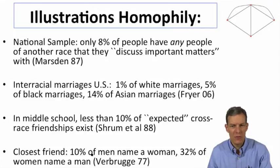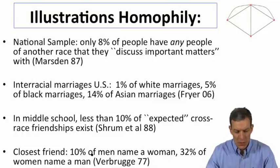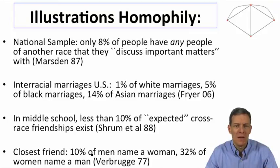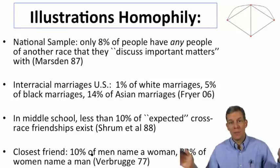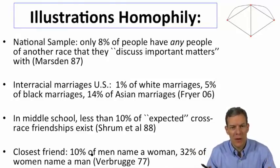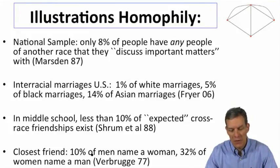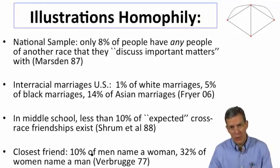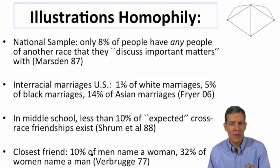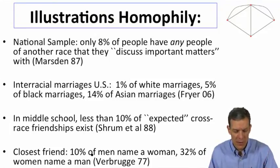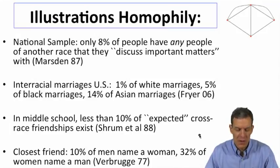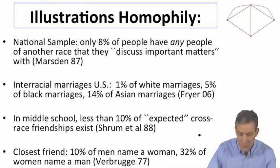To give some feeling for this: Peter Marsden's study, looking at a national survey in the U.S., found only 8% of people actually named anybody of another race with whom they would discuss important matters — much lower than you'd expect if people were naming others without regard to race. For interracial marriages in the U.S., a study by Roland Fryer found 1% of whites marry outside of white, 5% of blacks, 14% of Asians — less than what should be expected if these things were happening uniformly at random. High school or middle school friendships show less than 10% of expected cross-race friendships.